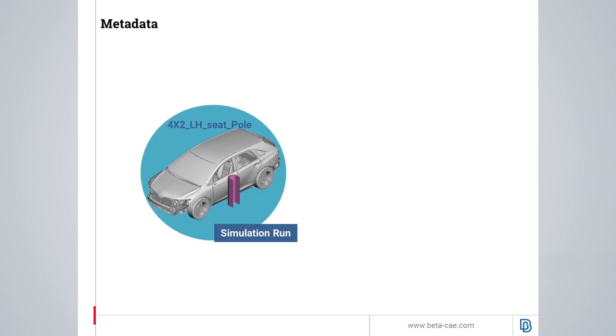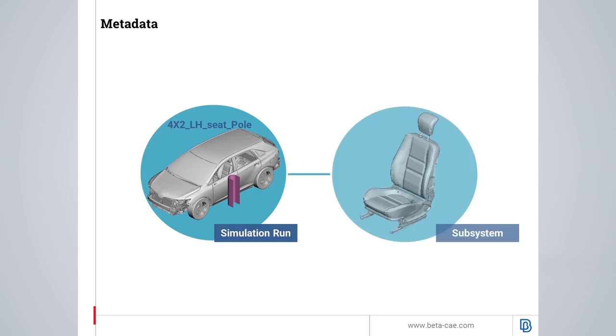Now, in a complex simulation model, let's focus on a specific subsystem, the seat. For this specific simulation run, there are some characteristics of the seat which are related to the simulation scenario.